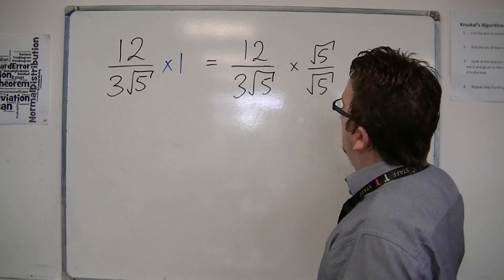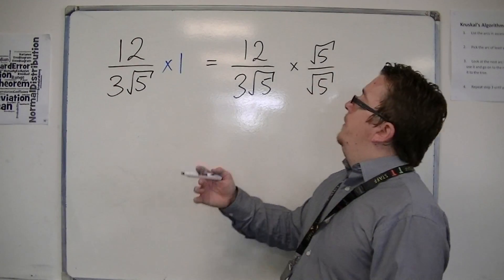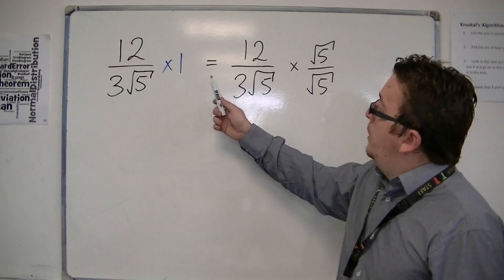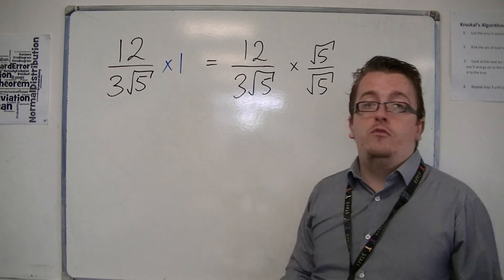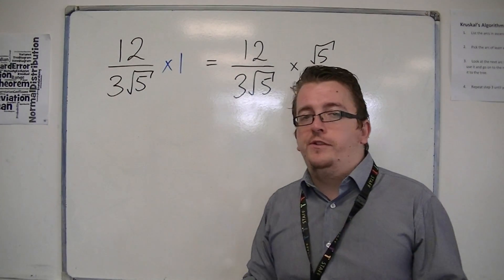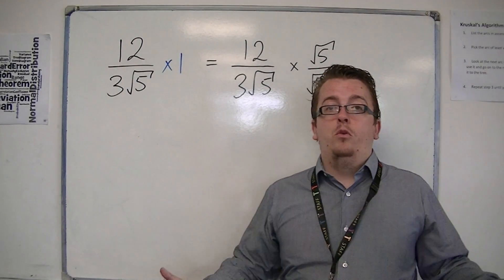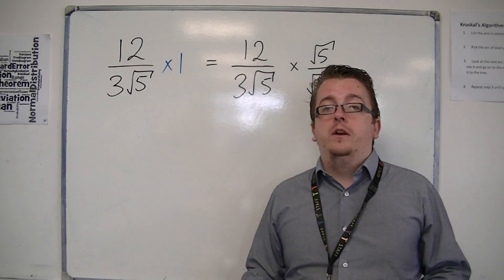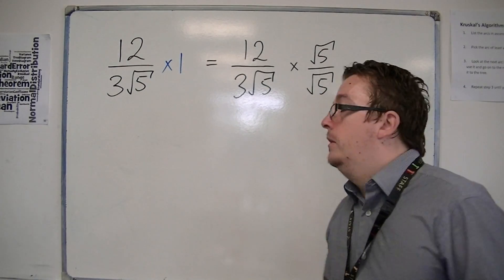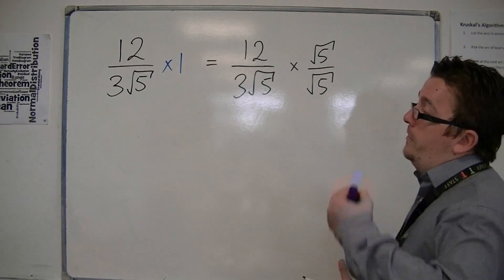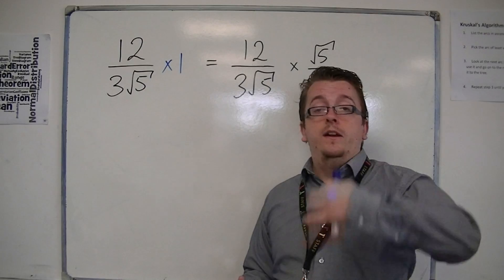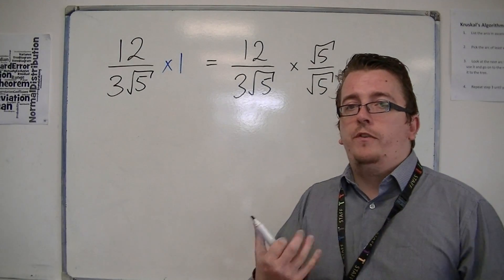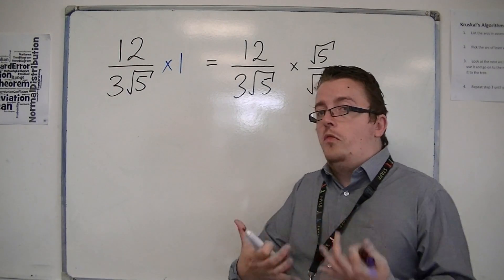Now you could potentially multiply this by 3 root 5 over 3 root 5, you could do that, but it will just make more cancellations for you. So it will make more problems for you. Remember, this is a non-calculator trick. So anything that's going to simplify the numerical side for you, the better.